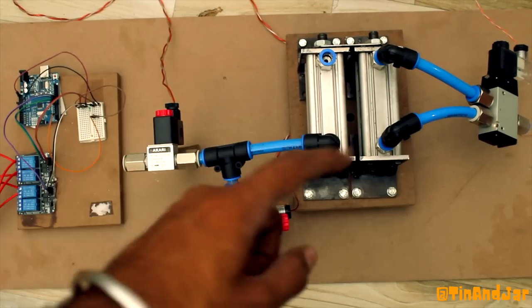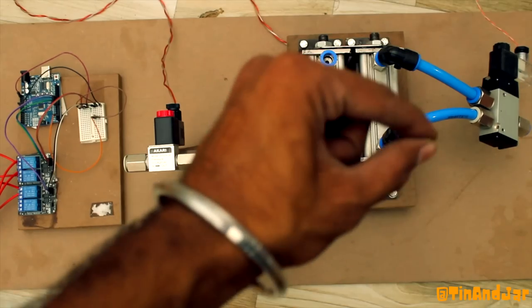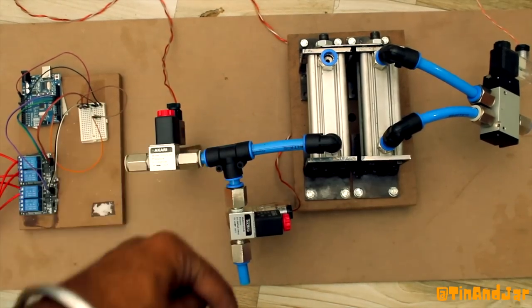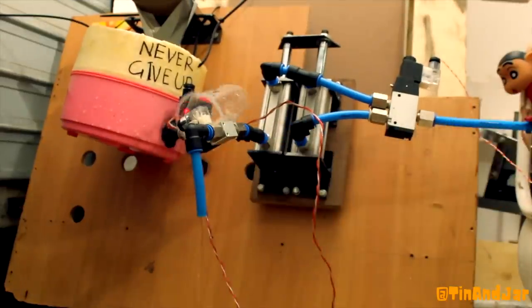This wall will be connected to the water. Whenever this cylinder goes on, this will suck the water. When the cylinder goes off, we will open this wall so water can get out. I think we will need more cylinders.